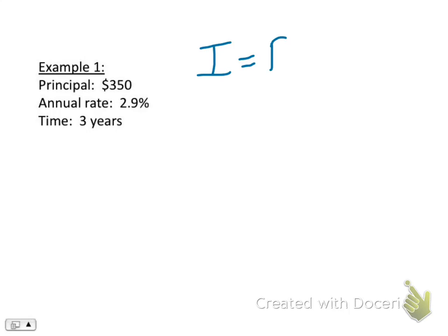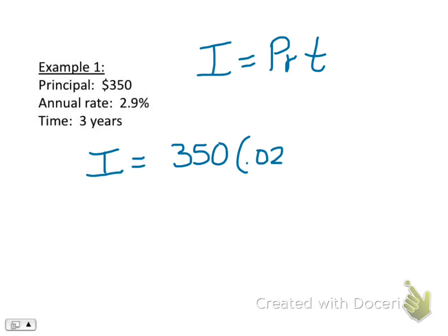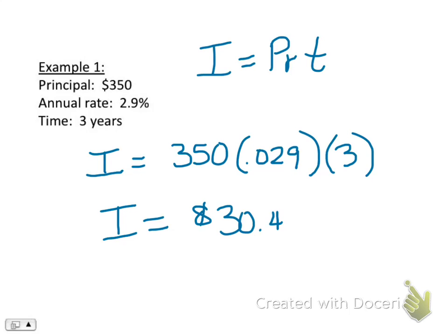Let's try an example. If you have a principal balance of $350 and an annual rate of 2.9% for three years, how much interest will you earn? Use the formula: interest is equal to principal times rate times time. Our principal is $350. Our rate can be expressed as a decimal by moving the decimal point two places to the left. Time is given in years. So through multiplication: $350 times 0.029 times 3. The interest for this situation would be $30.45. Make sure you're rounding to the nearest penny — that is the hundredths place.